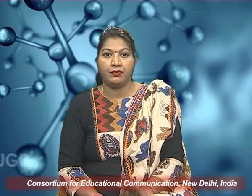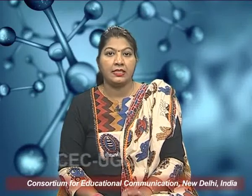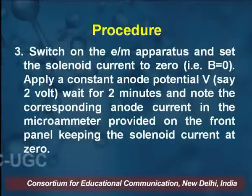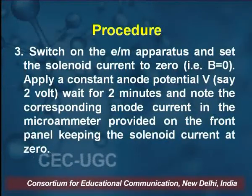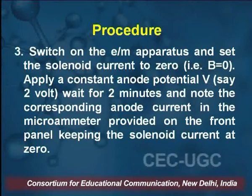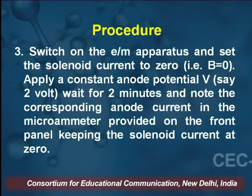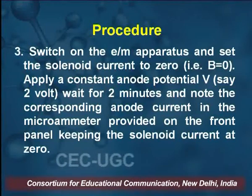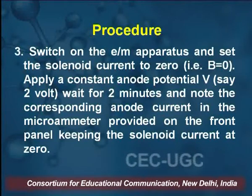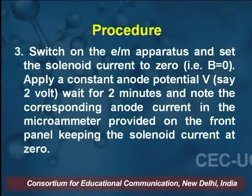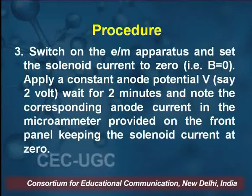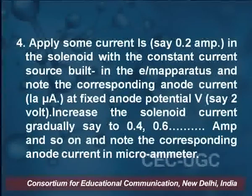For the first instance we fix the anode voltage at 2 volts and wait for 2 minutes. First we take the solenoid current at zero so the applied magnetic field equals zero. We fix the constant anode potential V equal to 2 volts, wait 2 minutes, and note down the anode current in microamperes at this value of 2 volts, keeping the solenoid current at zero.